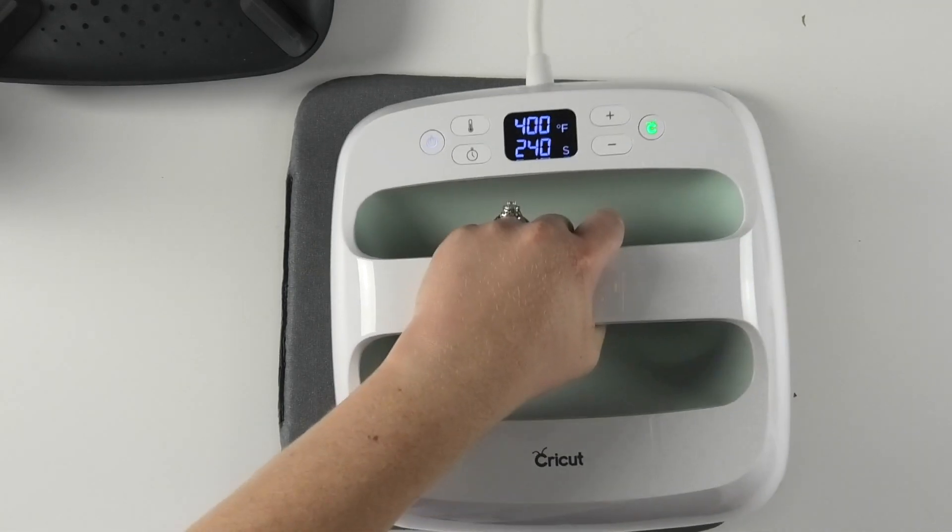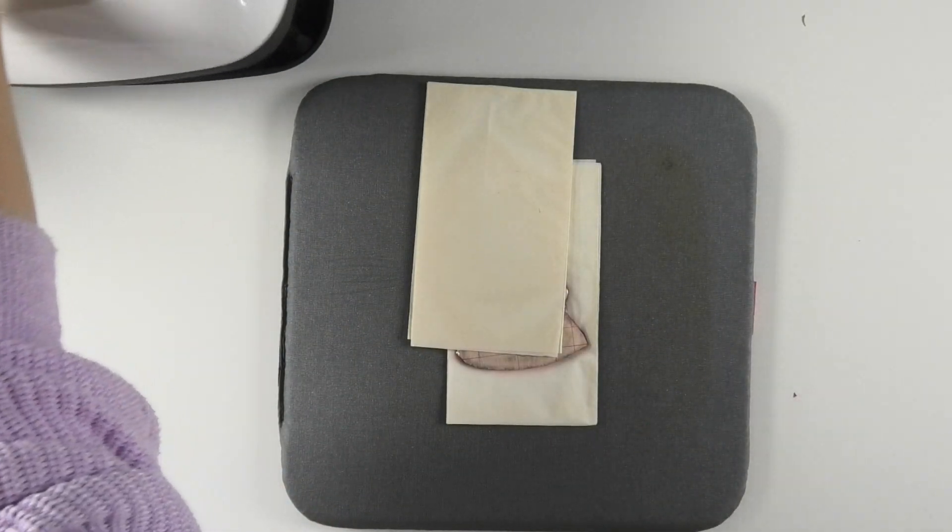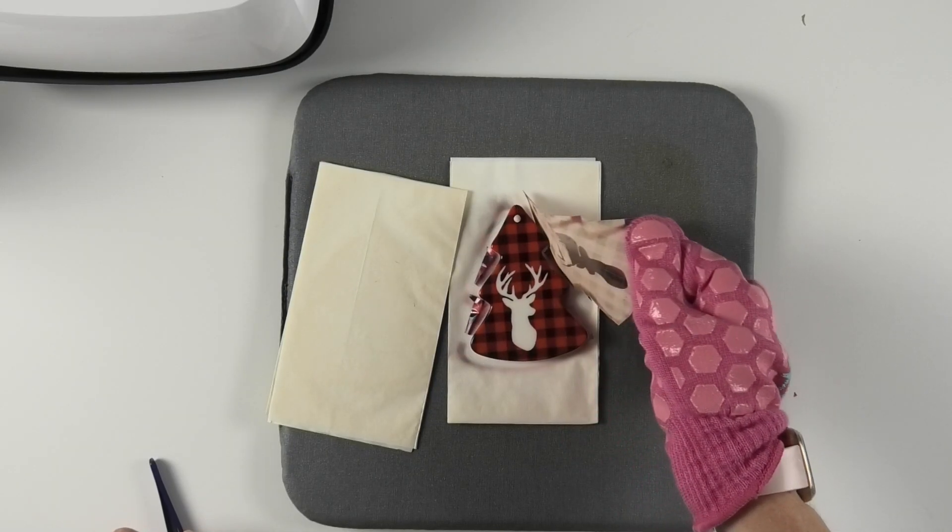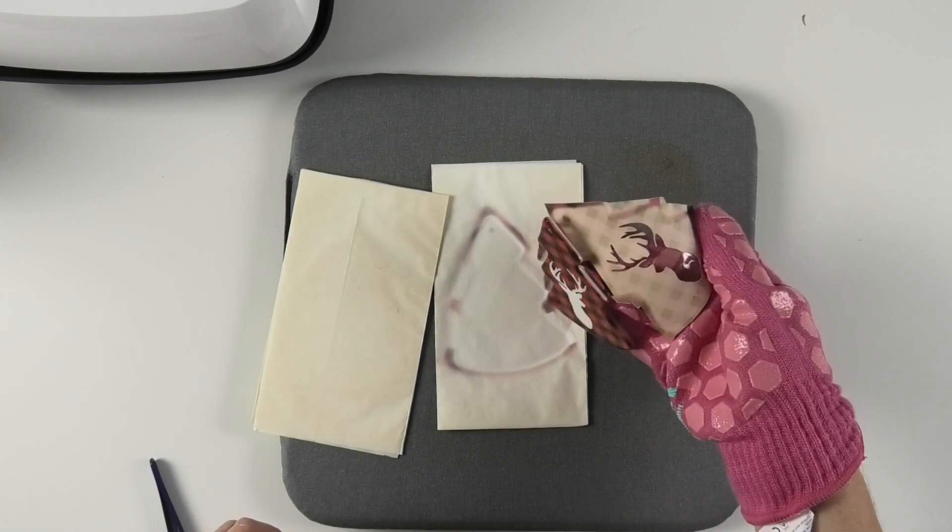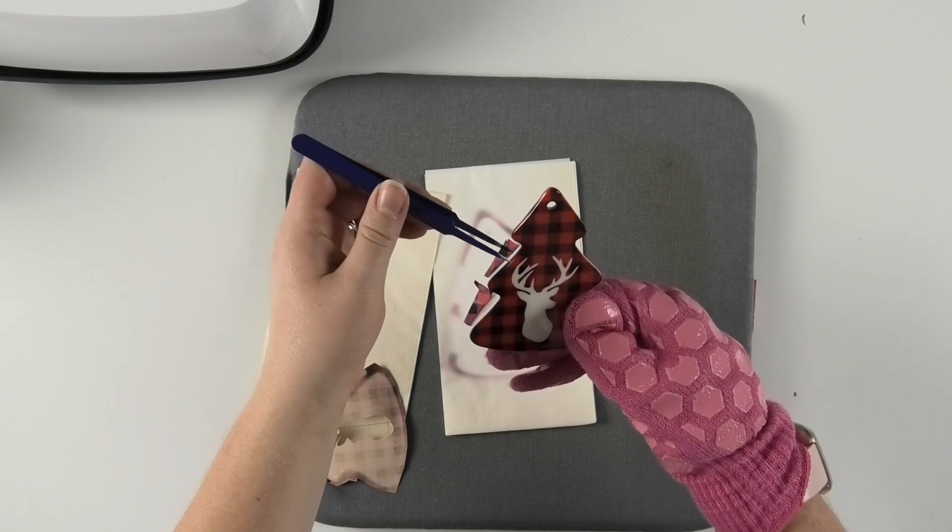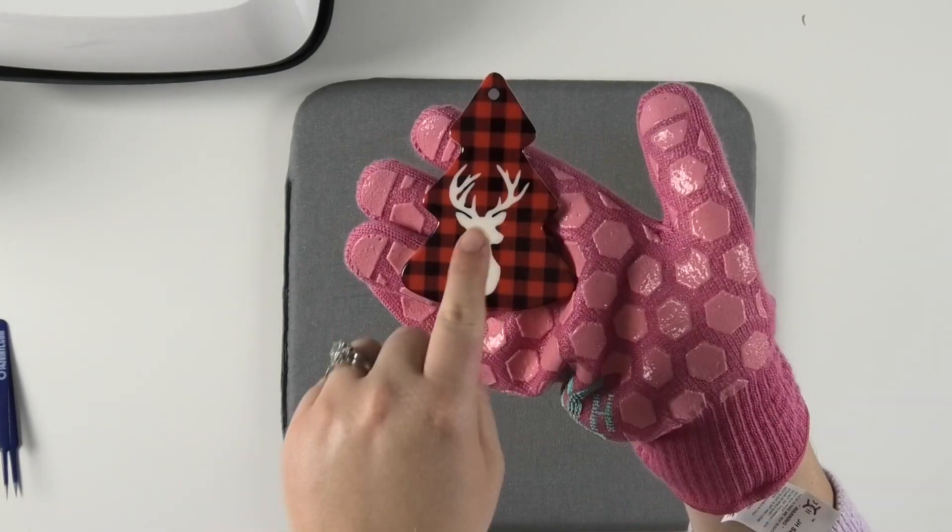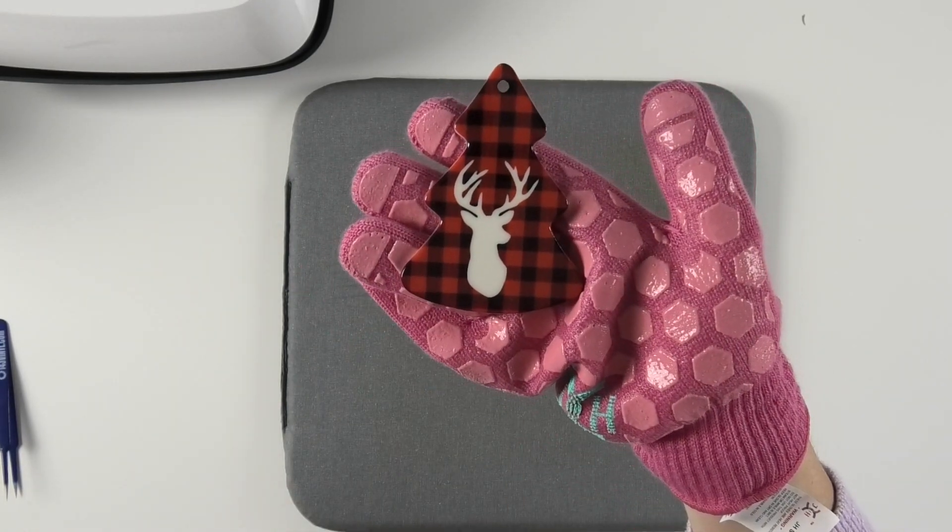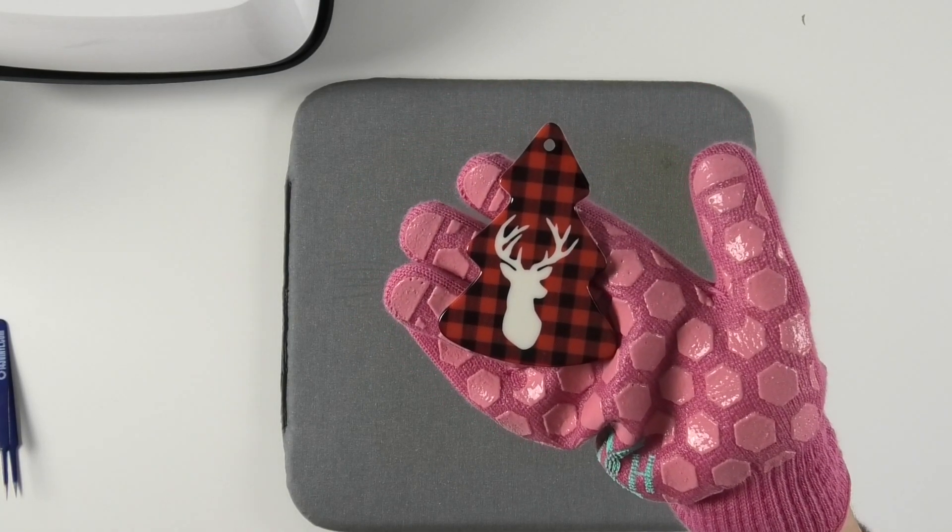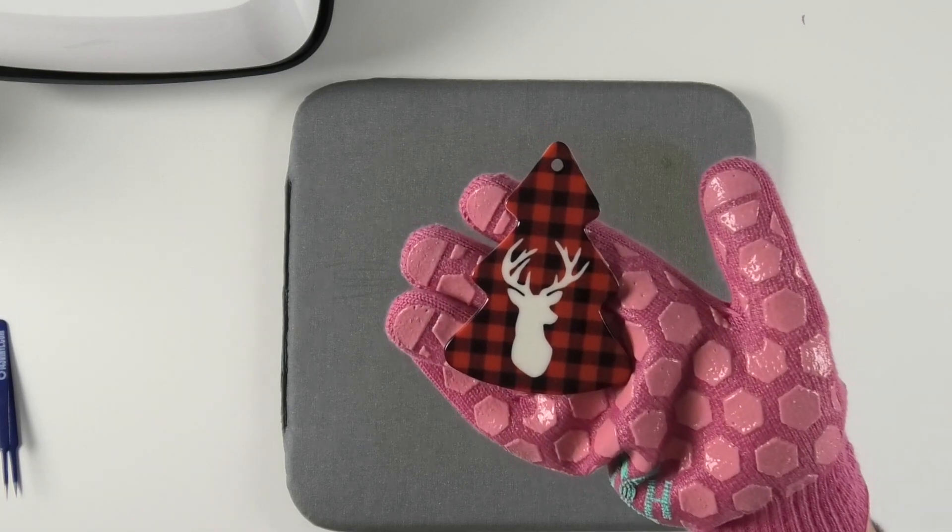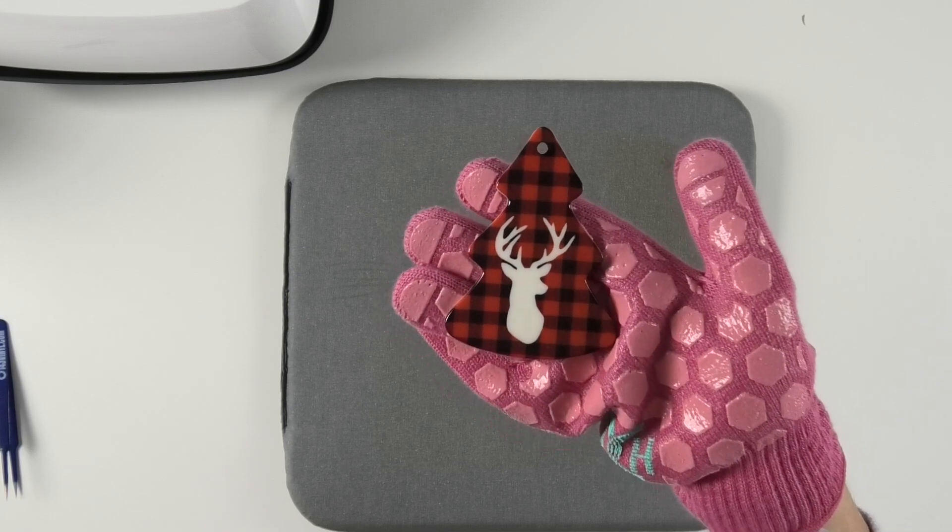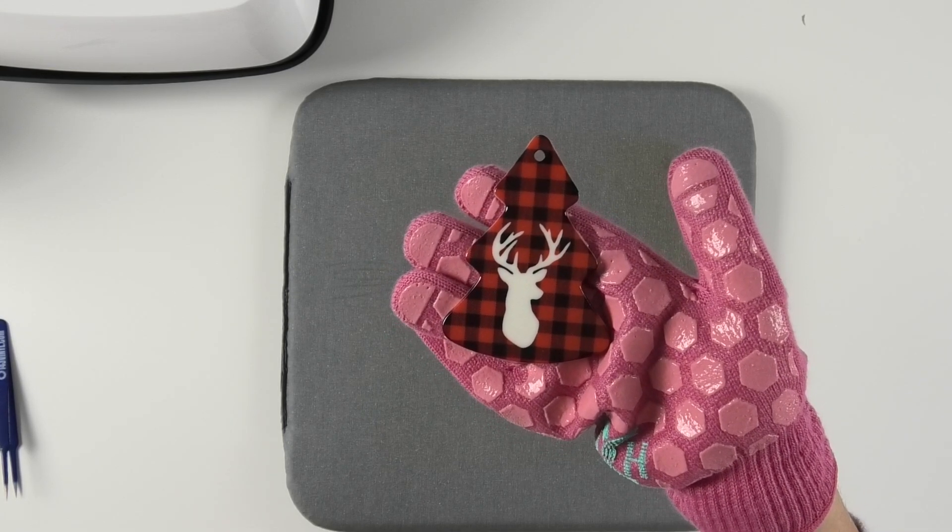Then once we're finished with the easy press, we can put it back in its cradle and we can use a heat glove to see how the tree turned out. Oh my gosh, you guys, it turned out so cute. Let me just remove some of this tape so you can clearly see it. Check out how cute that turned out. My buck silhouette is a little bit off center here on this tree, but honestly, for not having any kind of SVG or template, I feel like it turned out really, really well. So all you would need to do to finish up this gift is to add a ribbon once it cools down.